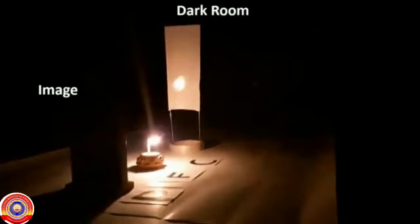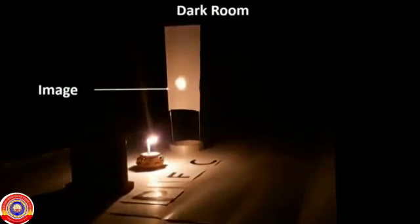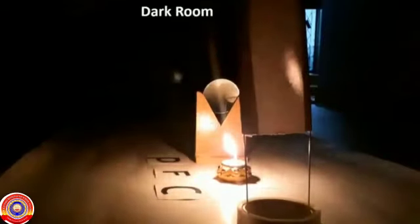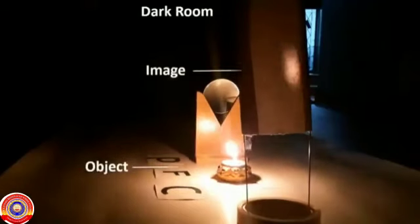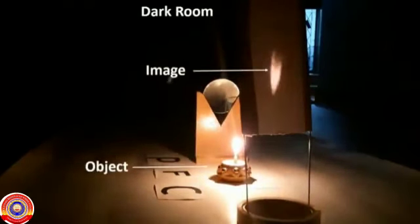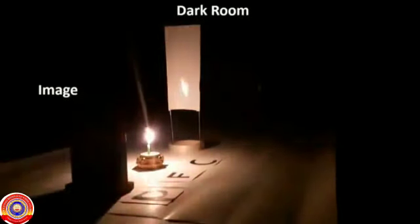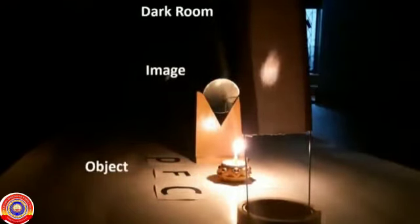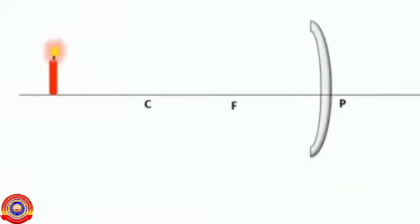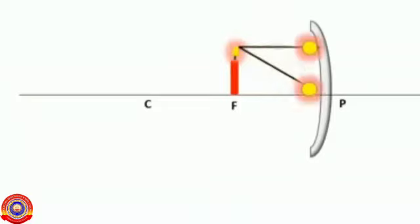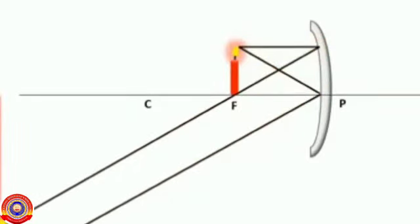In which position in front of the mirror do you get a clear image of the object? On placing the screen in between F and C, we get a clear image. The image is inverted and it is diminished. We can understand the position of the image and its features by means of ray diagrams. For this purpose, we take into consideration only two rays from among the many rays of light starting from a point on the object.